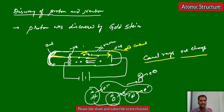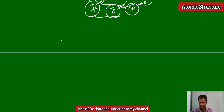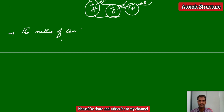Goldstein did the experiment just the reverse of J.J. Thomson's experiment. Properties of canal rays: they move in a straight line; in the presence of external magnetic or electric field they undergo deflection because they carry positive charge; they move toward the negative electrode plate; they have kinetic energy. All properties are similar to cathode rays, except their nature depends on the gas used.